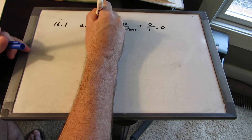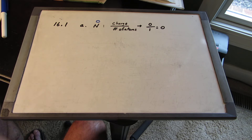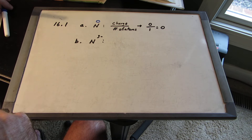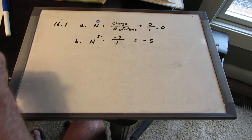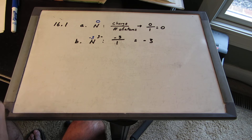The way we are going to write oxidation numbers is right above the element — I'll write them in blue. Part B: we have N3 minus. Again it is the charge divided by the number of atoms. The charge is negative three, and the number of atoms is one, so that is just negative three. So the oxidation number for nitrogen in N3 minus is negative three.